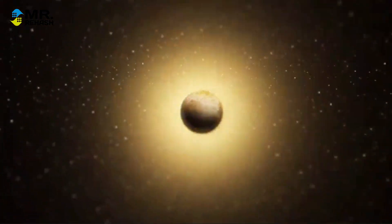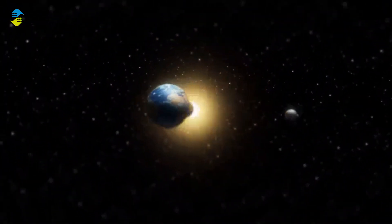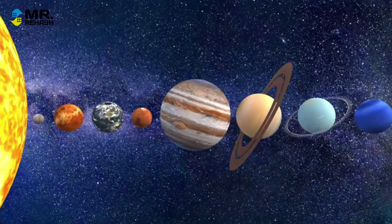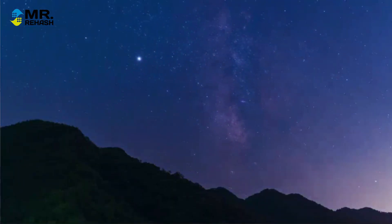When a planet is on the opposite side of the Sun from Earth, it is in a conjunction and is difficult to observe because it's lost in the Sun's glare. Conversely, when it's on the same side as Earth, it's in opposition and appears brightest and highest in the night sky.